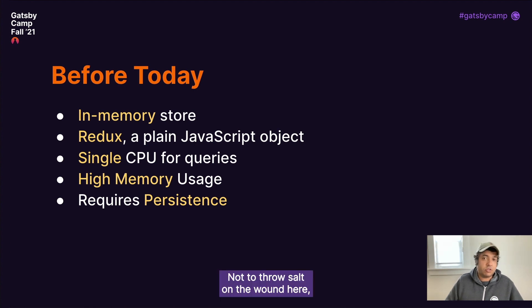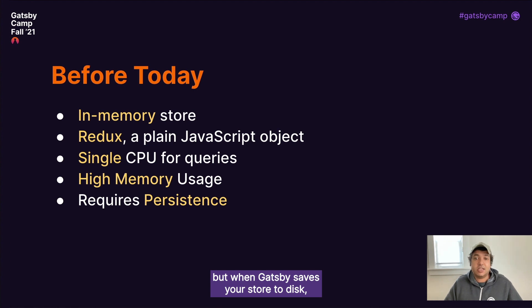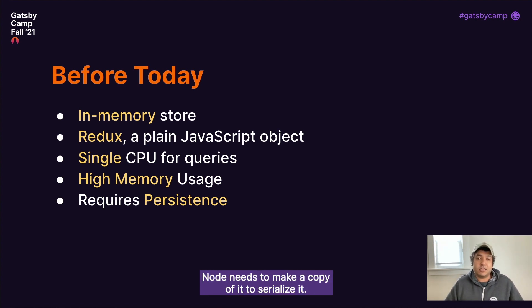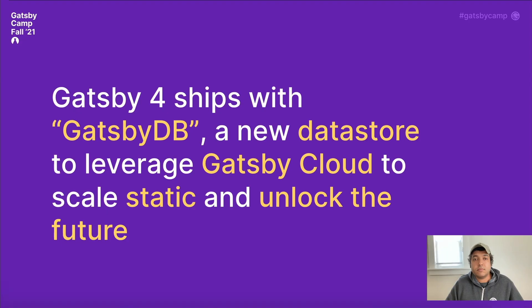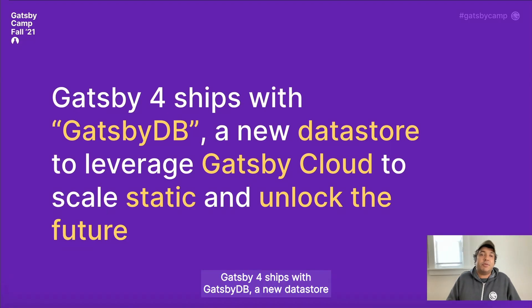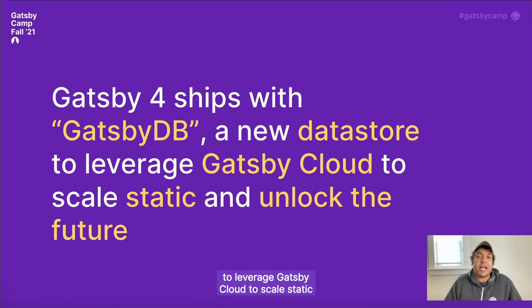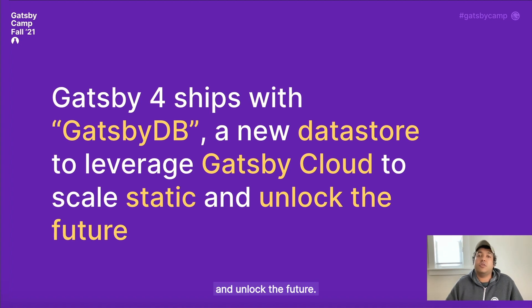Not to throw salt on a wound, but when Gatsby saves your store to disk, Node needs to make a copy of it to serialize it, so it actually needs way more memory to do persistence. Gatsby 4 ships with Gatsby DB, a new data store to leverage Gatsby Cloud to scale static and unlock the future.